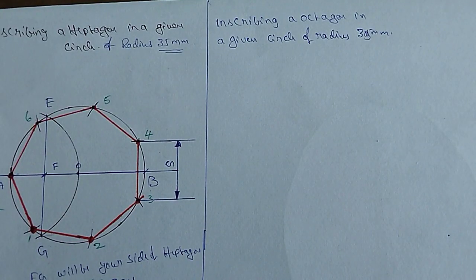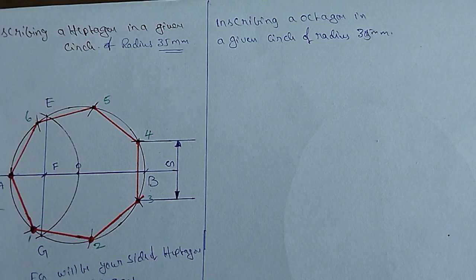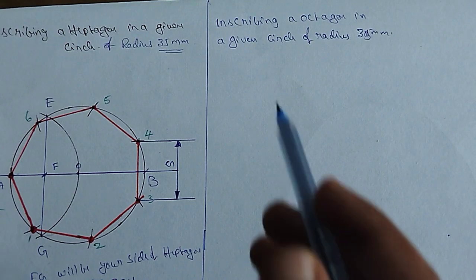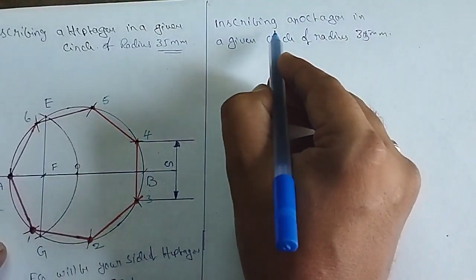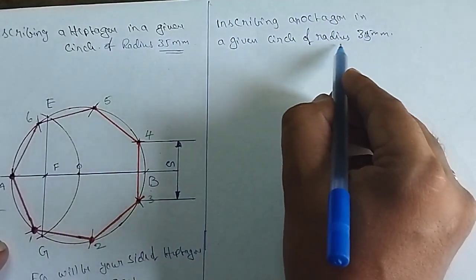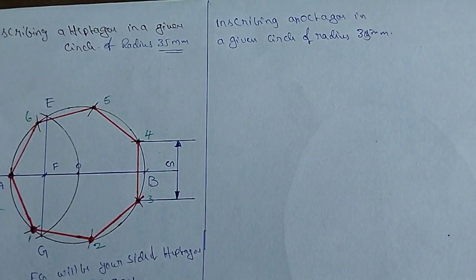We are going to draw the inscribing of an octagon. We are going to draw an octagon in a given circle of radius 35 mm. This is your question. The octagon is not the same — it is 35 mm.